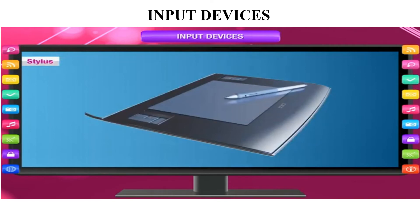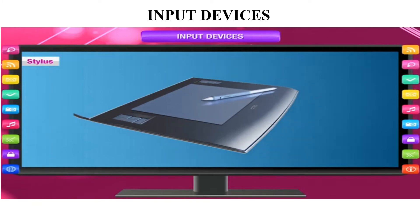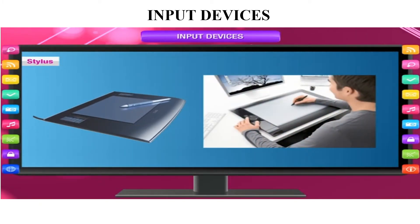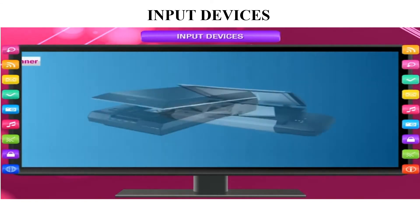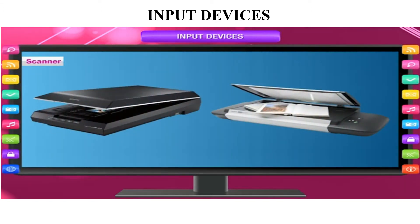The next input device is the stylus — it is just a pad and pen. We use the pen to write on the pad, and whatever we draw or write shows on the computer. So the stylus is one kind of input device.